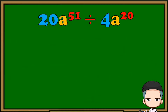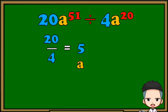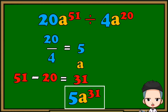Another one: 20a raised to 51 divided by 4a raised to 20. Divide the numerical coefficients, copy the variable, and subtract the exponents. The final answer is 5a raised to 31. That's the process in dividing polynomials with the same variables.